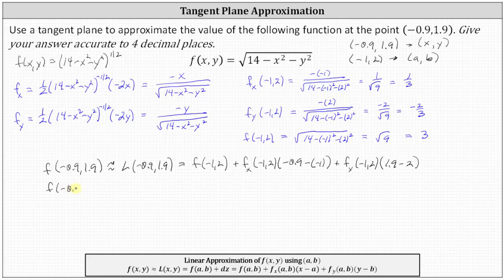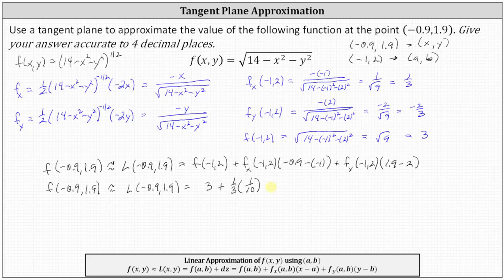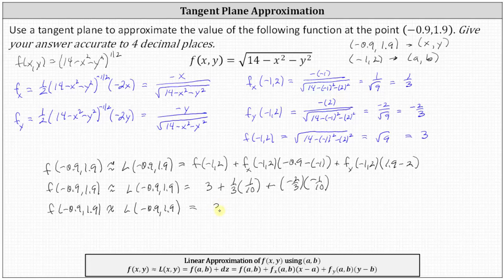Simplifying: f(-1, 2) is 3, plus the partial with respect to x at (-1, 2), which is one-third, times (-0.9 minus -1), which equals 0.1 or one-tenth, plus the partial with respect to y at (-1, 2), which is negative two-thirds, times (1.9 minus 2), which is negative one-tenth. This gives us 3 plus one-thirtieth plus two-thirtieths, which equals 3 and three-thirtieths, or 3 and one-tenth, which is 3.1.